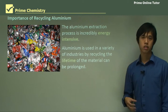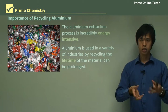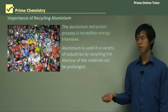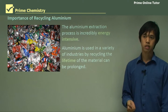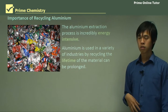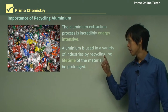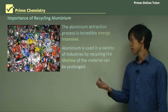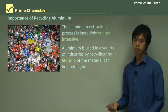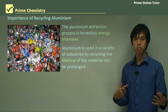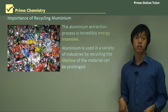Aluminium is used in lots of industries. We kind of just see it as cans — we drink from a soft drink can and throw it away. But aluminium is actually used in many other industries, like aircraft, because it's such a lightweight metal. It's also used in electrical wires for the same reason. By recycling, the lifetime of the material can be prolonged — we can give it use after it's been used once.